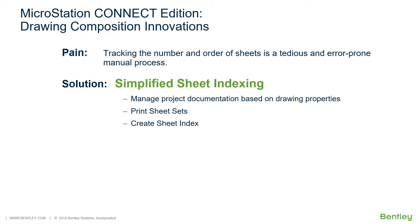For example, sheet numbering or sheet prefixes or suffixes for the sheet models within the sheet index. Once sheets are added to a sheet index, you can print all or a subset of the sheets by clicking the Print Organizer icon in the Explorer's Sheet Index tab.